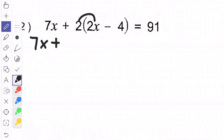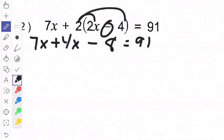7x plus 4x. We have to use the minus. Minus 2 times 4 is 8 equals 91. Combine like terms. I got 11x minus 8 equals 91. We're going to add 8 to both sides of the equation.